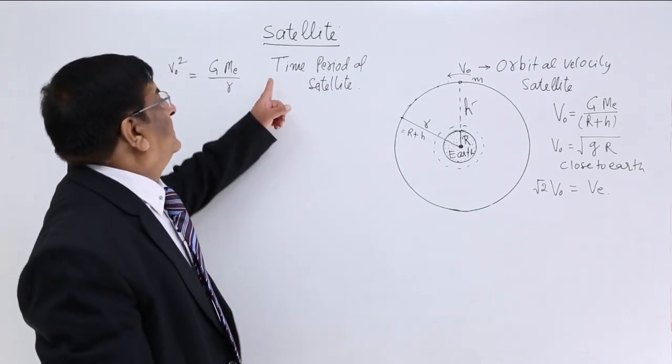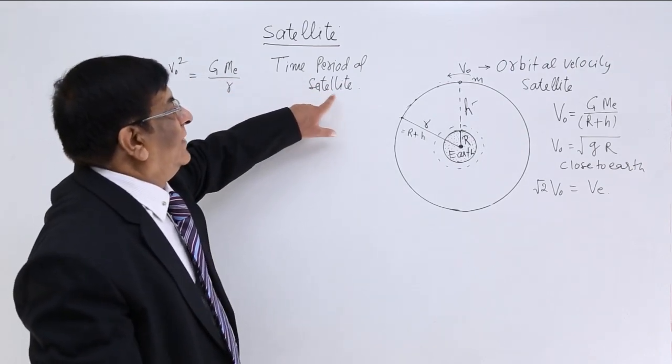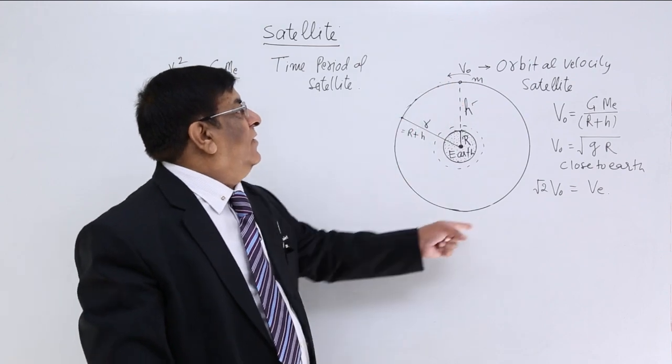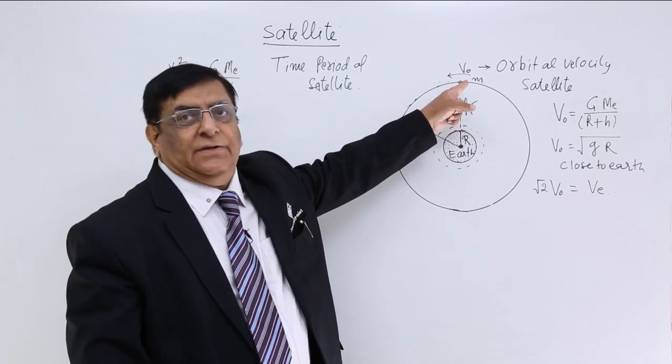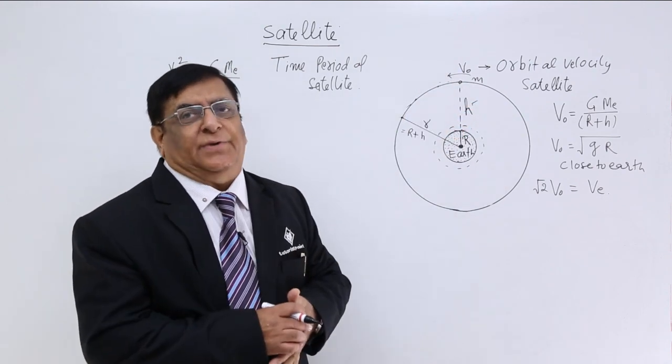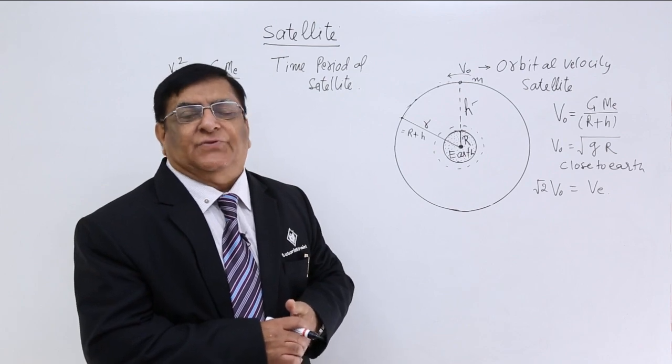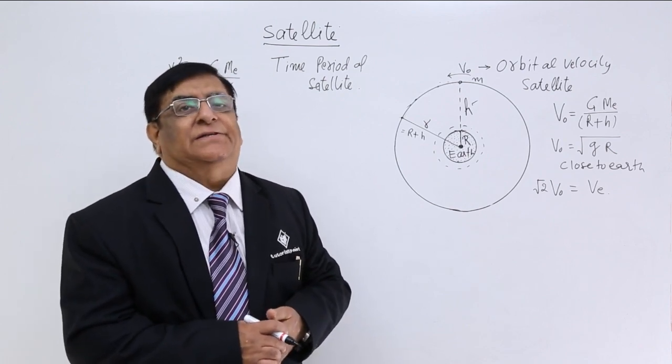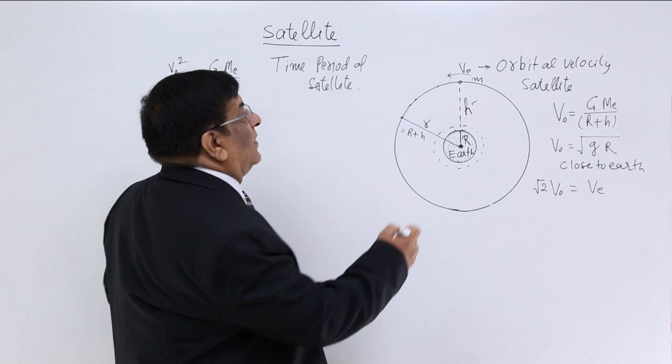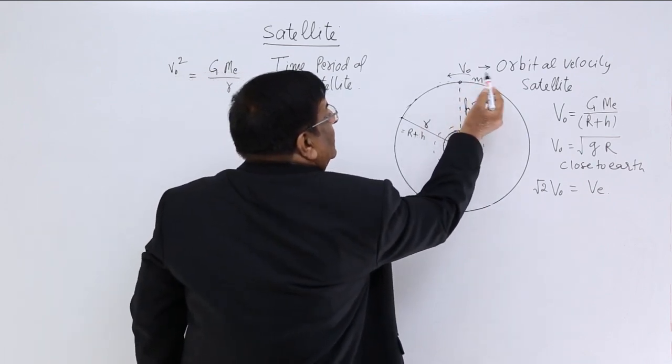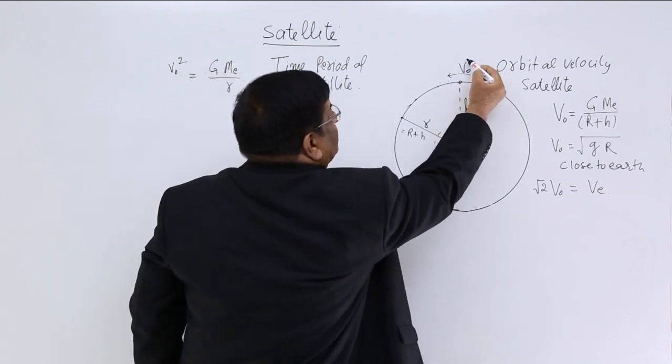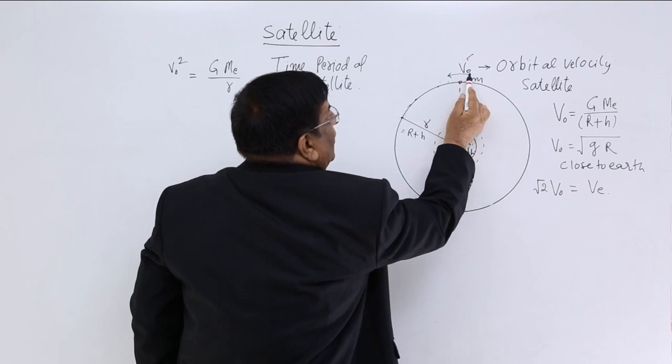Time period of a satellite. We want to find out a satellite is moving with orbital velocity v. In kinematics we have a time period formula that gives us the distance divided by speed. Now if this satellite is moving with a speed v0, v orbital,